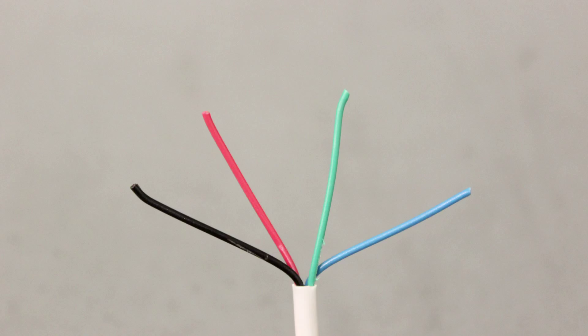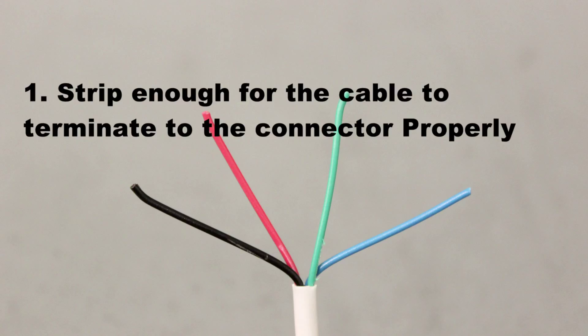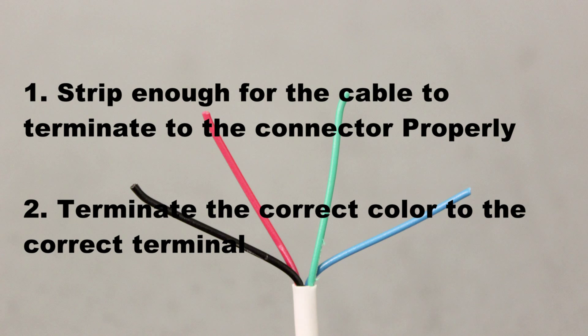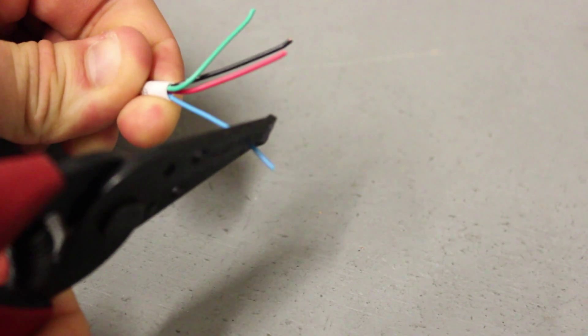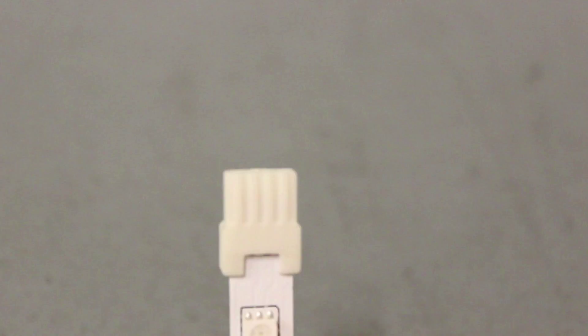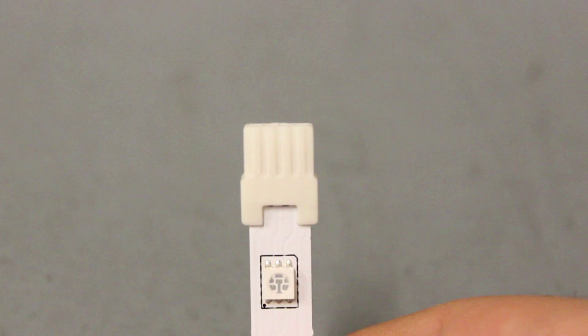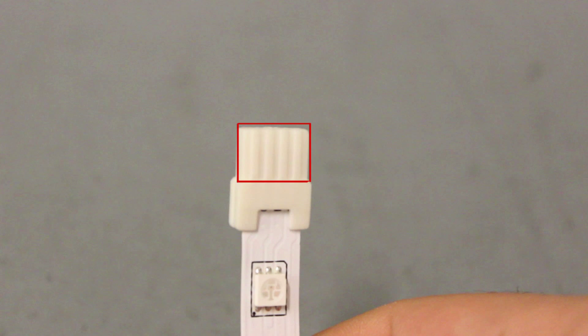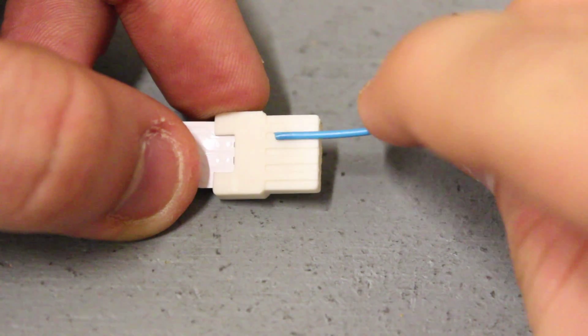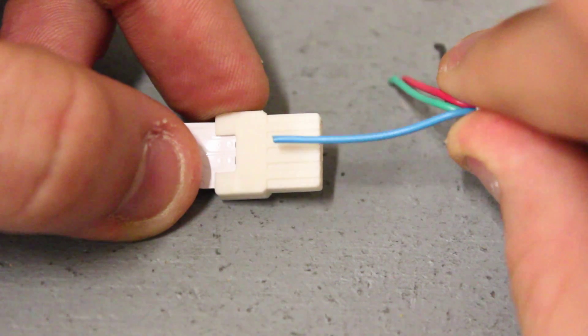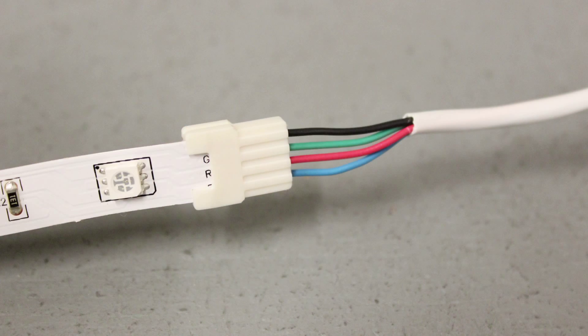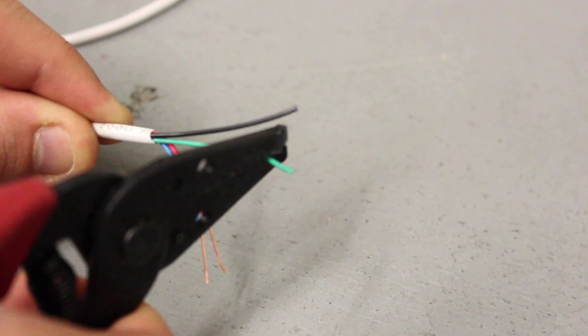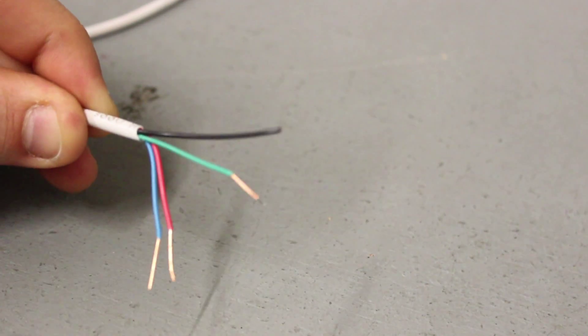Before we strip these wires, we need to make sure that one, we strip enough for the cable to terminate to the connector properly, and two, that we terminate the correct color to the correct terminal. There is an easy way to figure out how much cable you'll need to strip. Take a look at your connector. There is a line on each connector that shows you where the inserted wire is going to stop. You'll need to strip about a quarter of an inch off each lead to ensure that the leads make full contact with each terminal input. Now strip each lead a quarter of an inch using your Klein cable strippers.